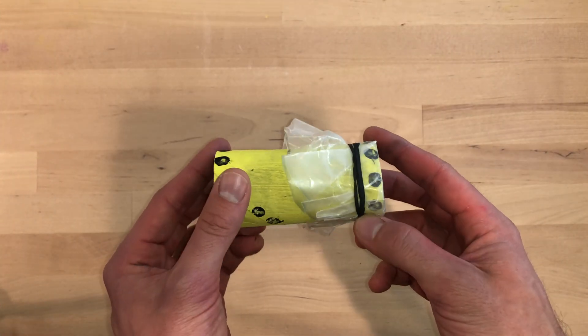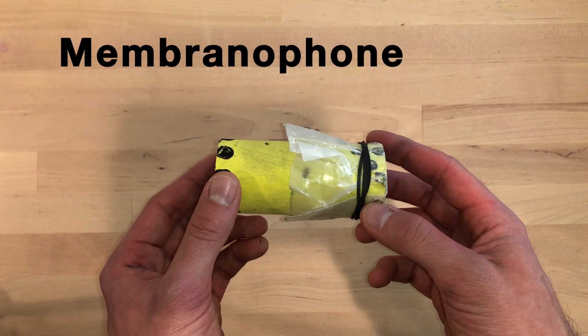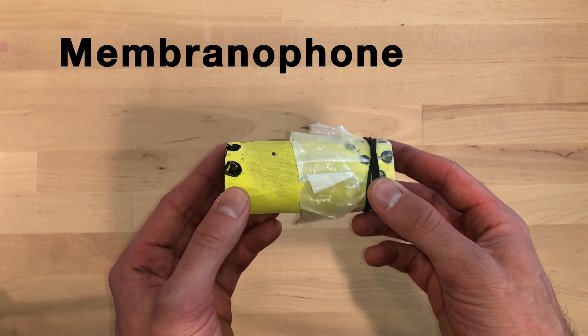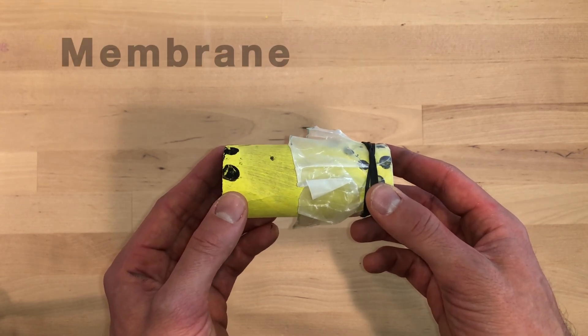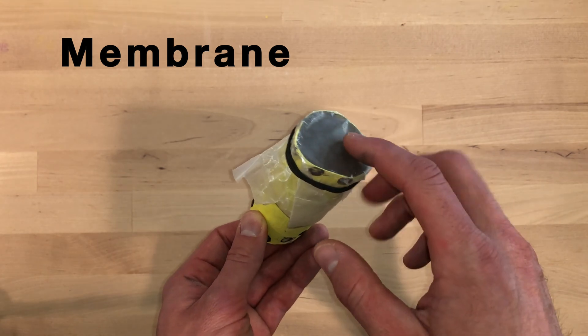A kazoo is a member of the Membranaphone family of instruments. A Membranaphone uses a membrane or resonator to produce sound.